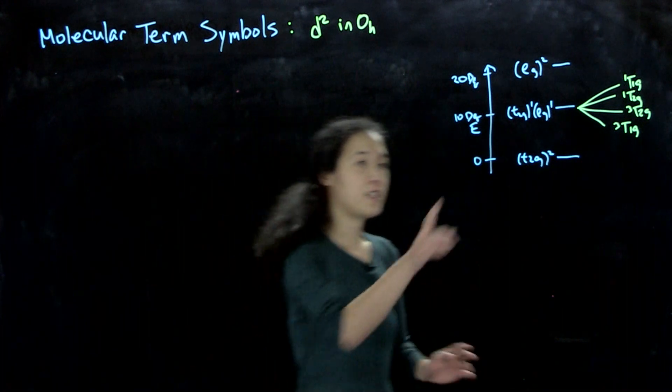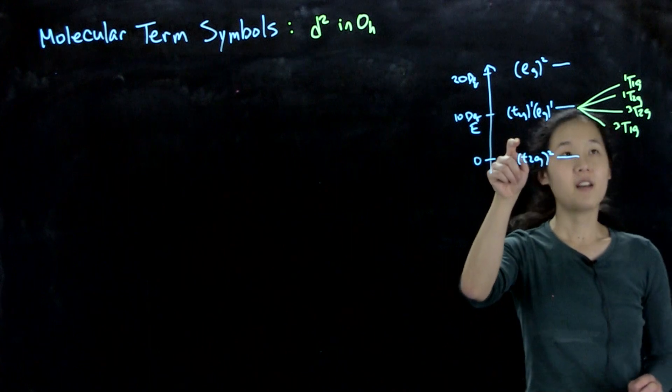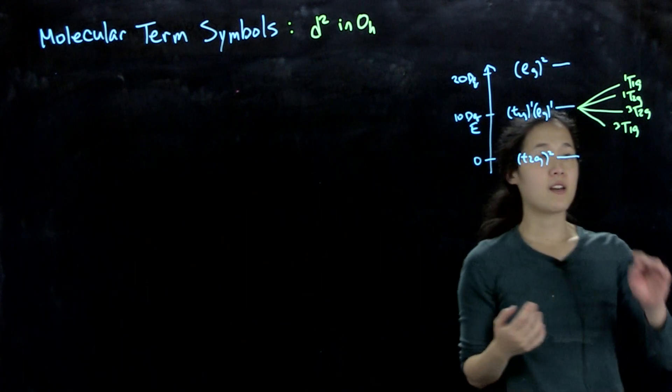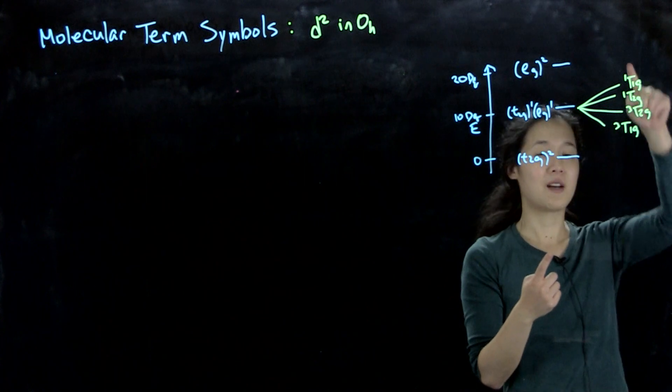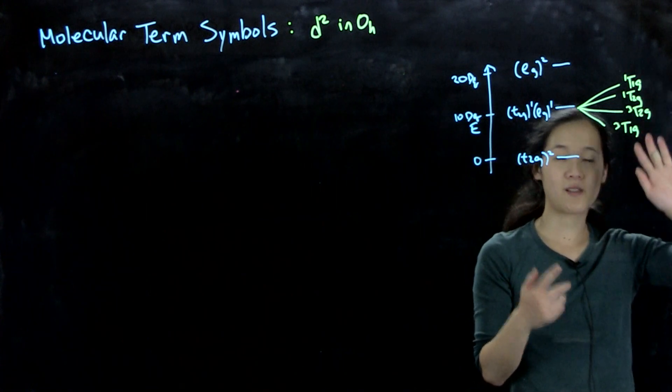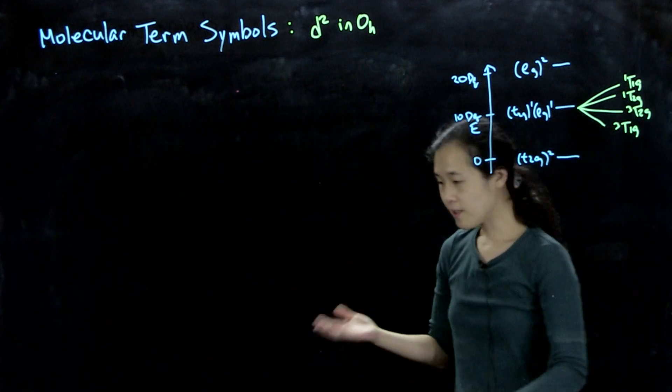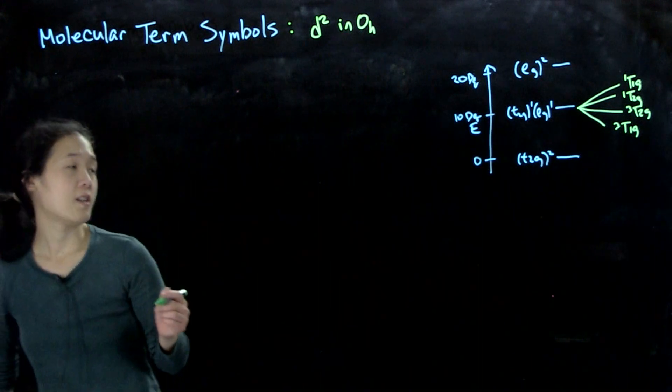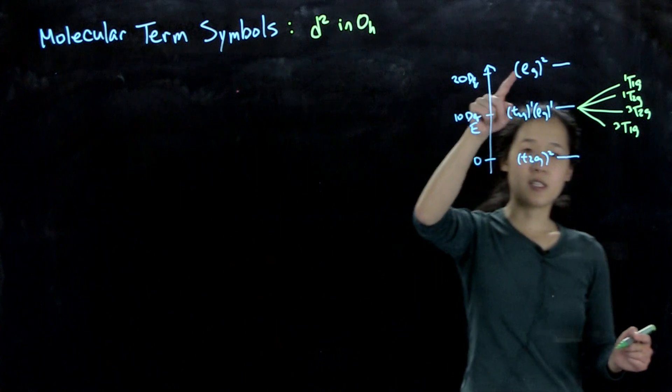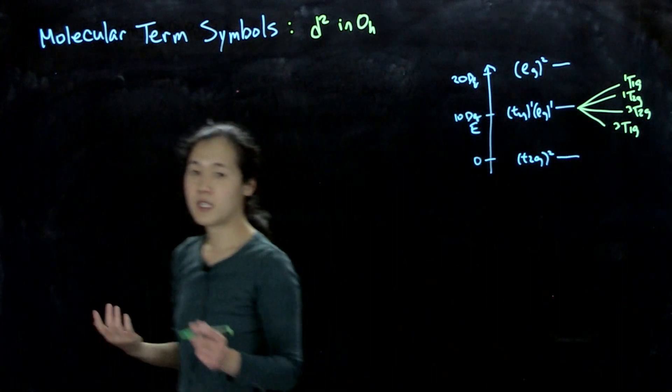OK, so last time we did the t2g1 eg1 configuration, and we were able to get these terms just by finding the possible spins and then adding that to all the possible orbital symmetry. So that was really easy. Here is what happens when things get a little bit more complicated. So let's consider now this higher energy eg2 configuration, doubly occupied eg.